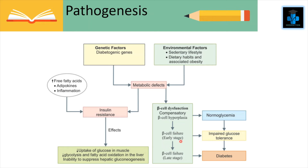However, at some point the beta cells exhaust their capacity to adapt — this is the early stage of beta cell failure. Beta cell compensation cannot maintain normal blood glucose, and the patient develops impaired glucose tolerance. In the late stage, or beta cell failure stage, decreased insulin secretion and hyperglycemia develop and frank diabetes results.